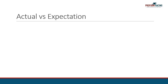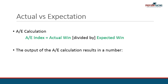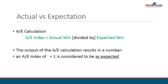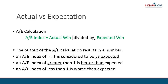The AE Index is an improved metric compared to impact values and is calculated by taking the actual winners and dividing it by the expected winners. An AE Index of 1 is considered to be as expected. An AE Index of greater than 1 is better than expected. And an AE Index of less than 1 is worse than expected.